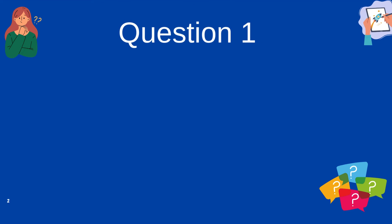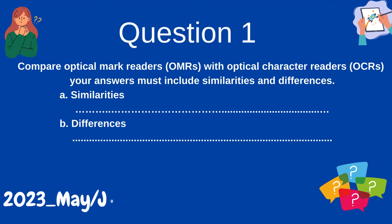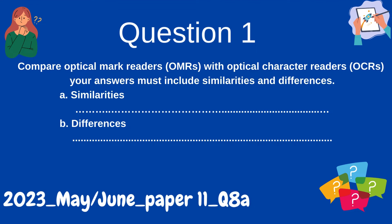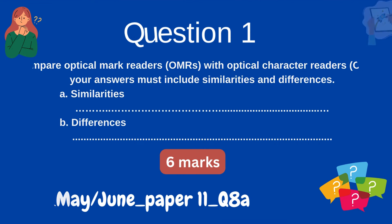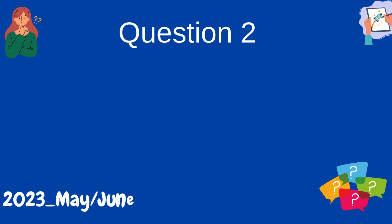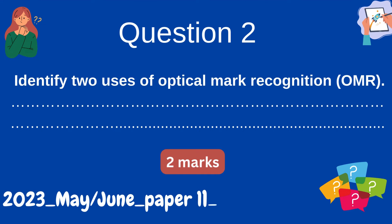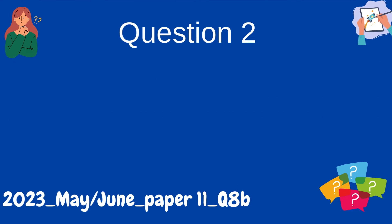Question 1: Compare optical mark readers (OMRs) with optical character readers (OCRs). Your answer must include similarities and differences. (A) Similarities. (B) Differences. Question 2: Identify two uses of optical mark recognition (OMR).